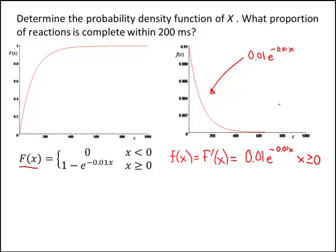So now if we want to answer this question, we could do it two ways. So what proportion of reactions, or what's the probability of reaction time is less than 200 milliseconds? Well, that's just F of 200.